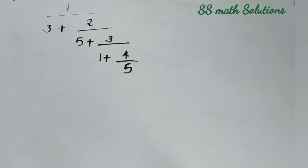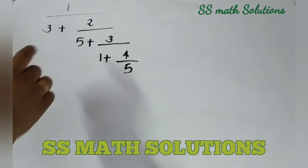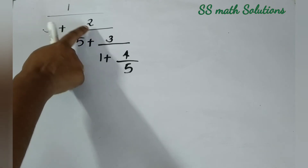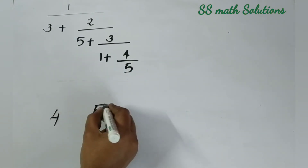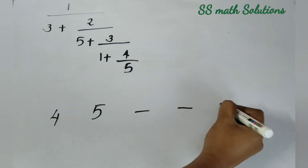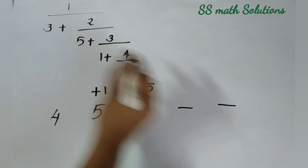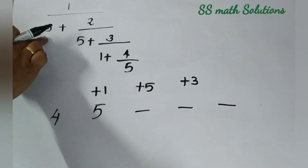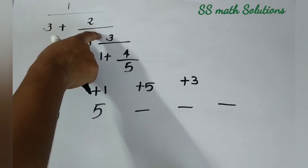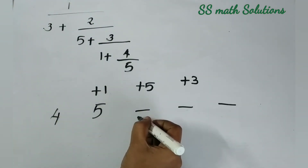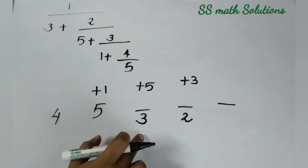Our next question: 1 divided by 3 plus 2 divided by 5 plus 3 divided by 1 plus 4 by 5. What is the difference here? In the previous questions we had 1 and 1, but in this case the numerators 2 and 3 are there. We write 4 and 5 here and get 3 extra numbers, starting from plus 1, plus 5, plus 3. Then we also need to write the numerators 2 and 3 as denominators of those 3 extra numbers — write 3 here and 2 here.